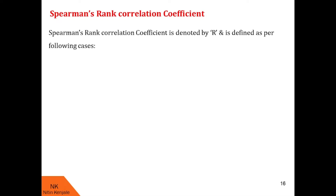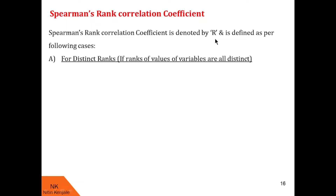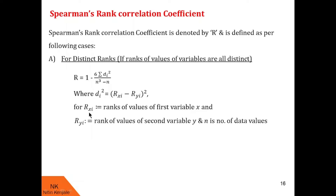Spearman's Rank correlation coefficient is usually denoted by capital letter R and is defined as per the following cases. In Case 1, we see how to find the correlation coefficient if the ranks of the values of the variable are all distinct in nature. In that case, R is given by 1 minus 6 into summation di-square upon n-cube minus n, where di-square is given by Rxi minus Ryi whole square, where Rxi denotes ranks of the values of the first variable x, and Ryi denotes rank of the values of the second variable y, and n is the number of data values in each variable.